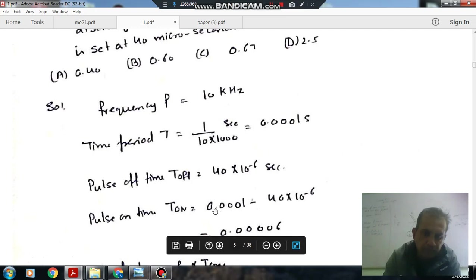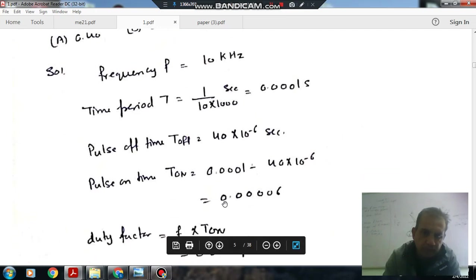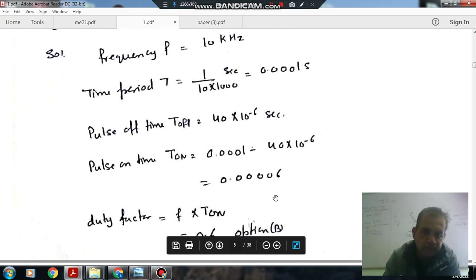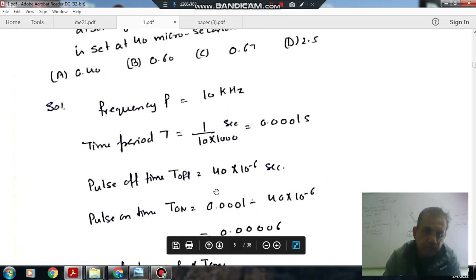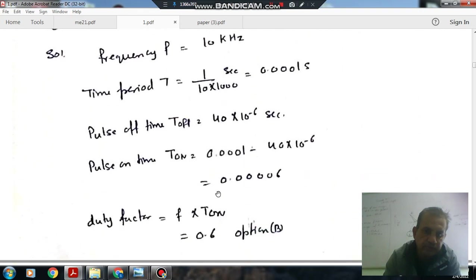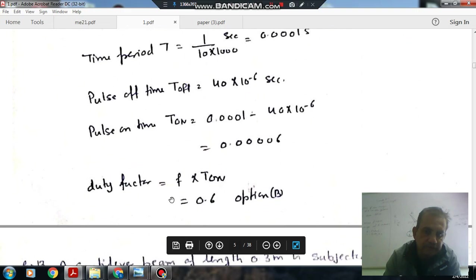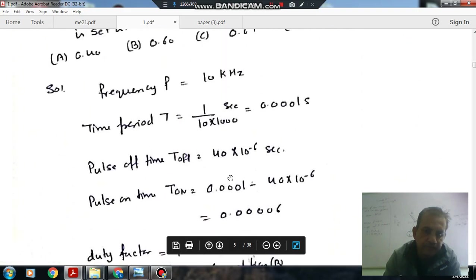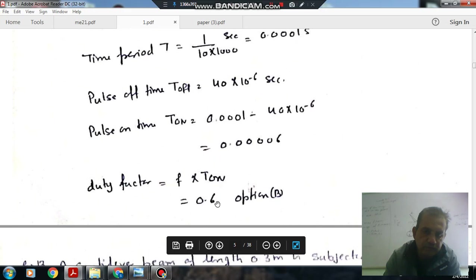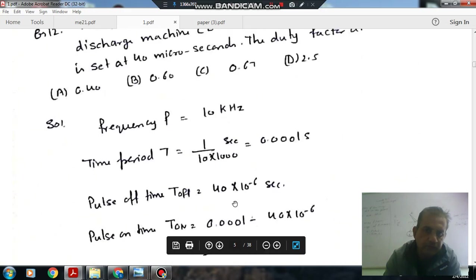Total time is 0.0001 and off time is 40 microseconds, so on time is total time minus off time, that is 0.00006. Duty factor is frequency into on time, so that is 0.6. The answer is 0.6, option B.